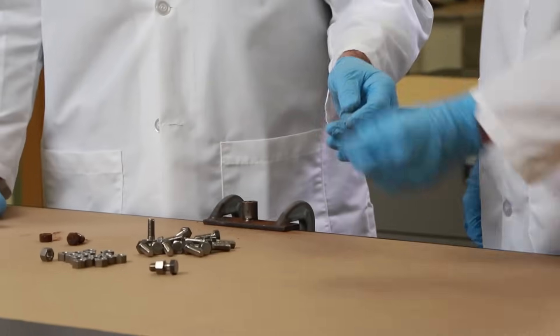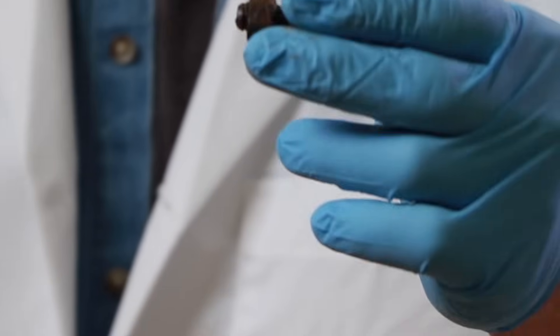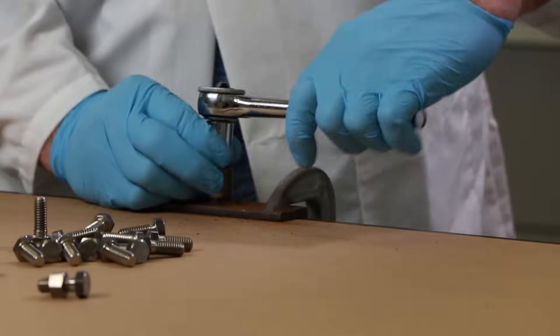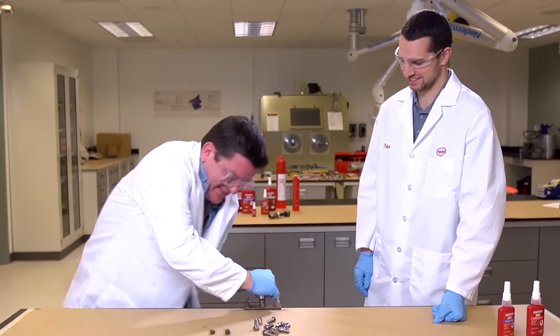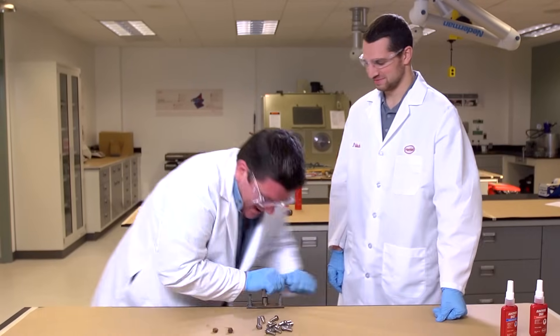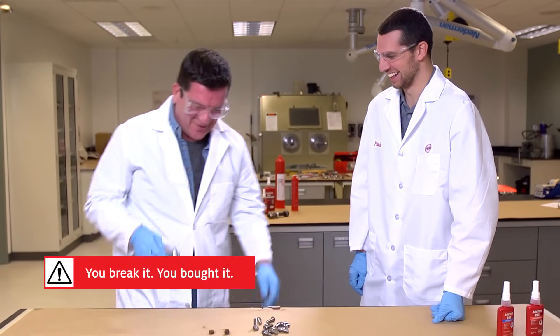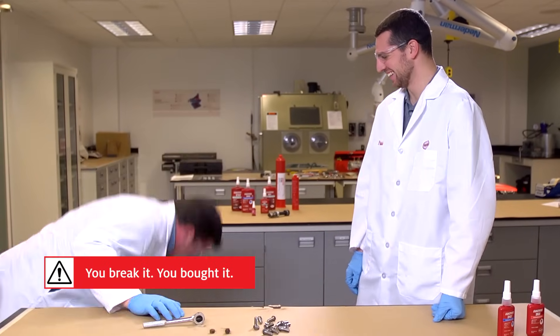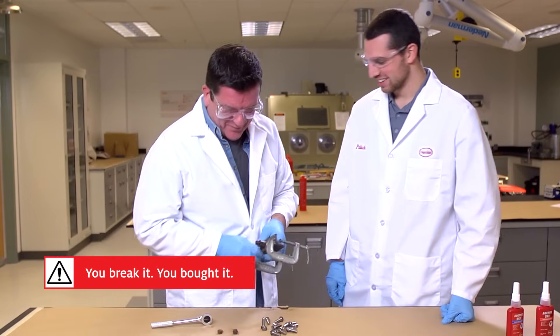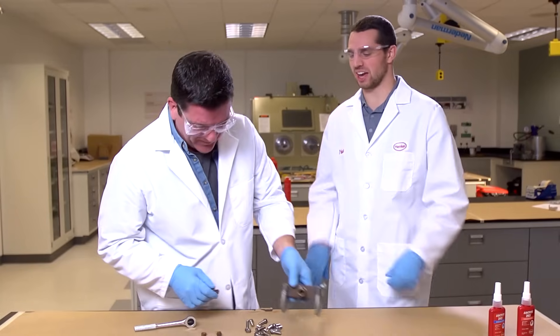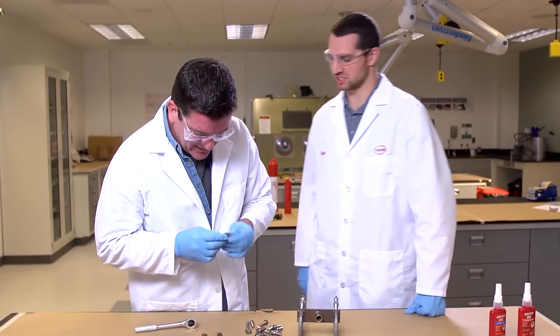You got another one there? What's this one here? Yeah. This has no thread locker. Wow. Look at that. I think I broke it. Wow. What a difference that is. That is amazing. Absolutely amazing. Yeah. So that corrosion really got in there and rustled those bolts together.